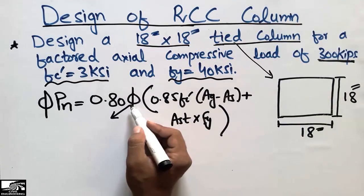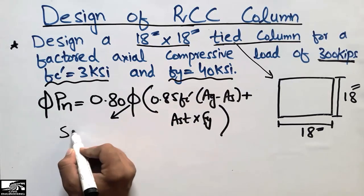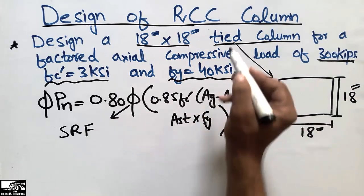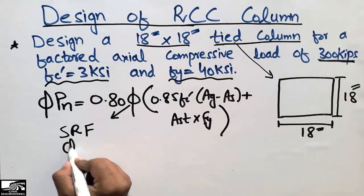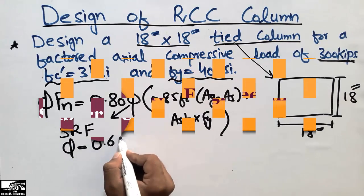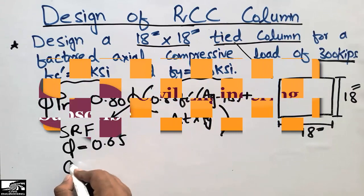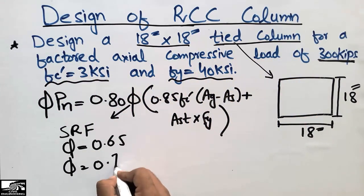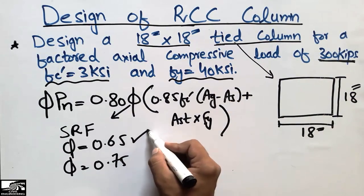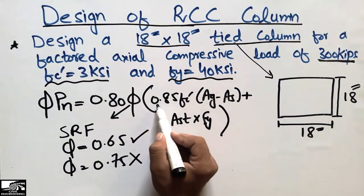I've given a link in the description where you can watch my video on the strength reduction factor. For tied columns, the φ value is 0.65, while for spiral columns the φ value is 0.75. In this example we have a tied column, so we will use φ = 0.65.